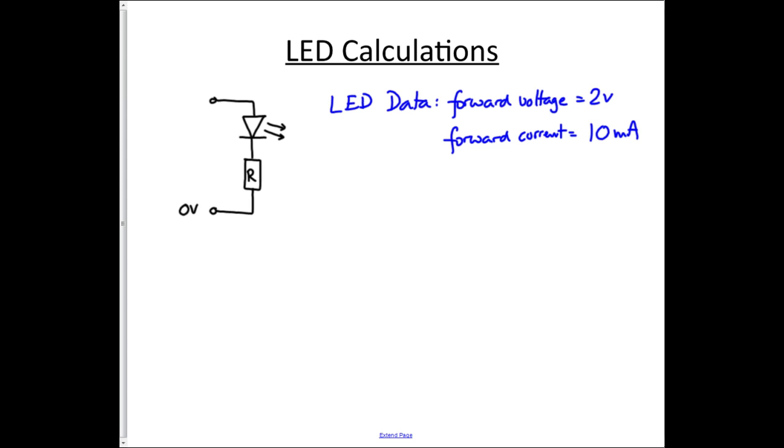What we're going to try and do now is work out how to calculate the resistor for an LED, which occurs in pretty well every question paper you're ever going to do. So we've got a simple circuit here, we've got an LED and a resistor, and let's give ourselves a supply voltage, let's say 15 volts.